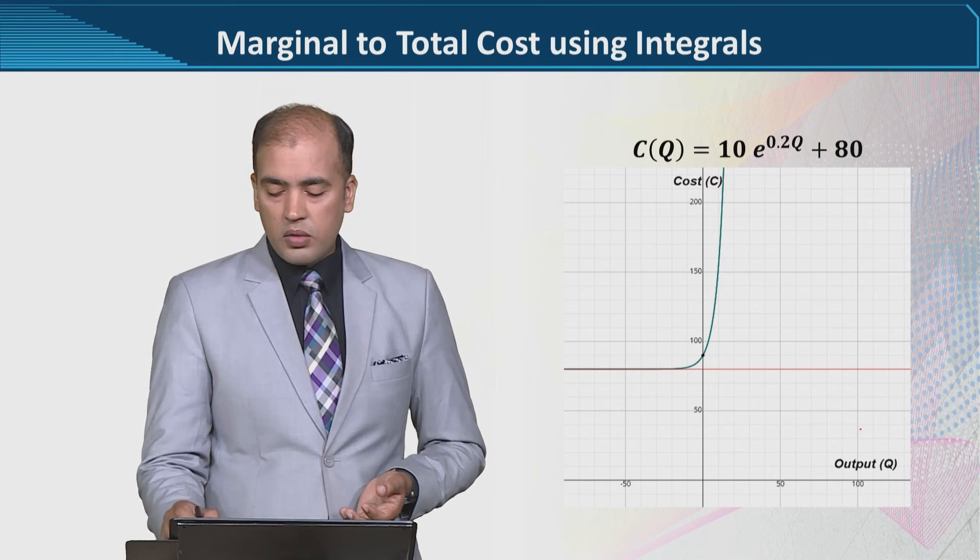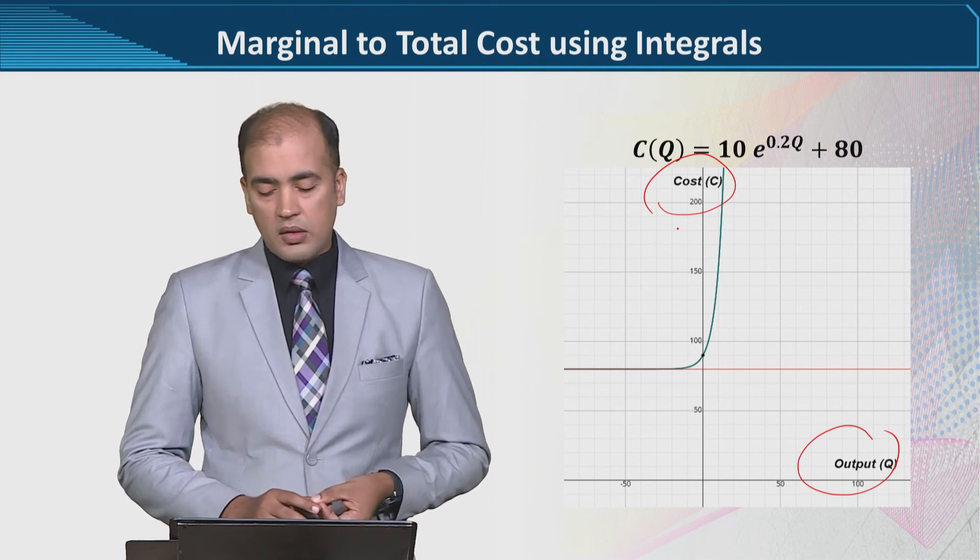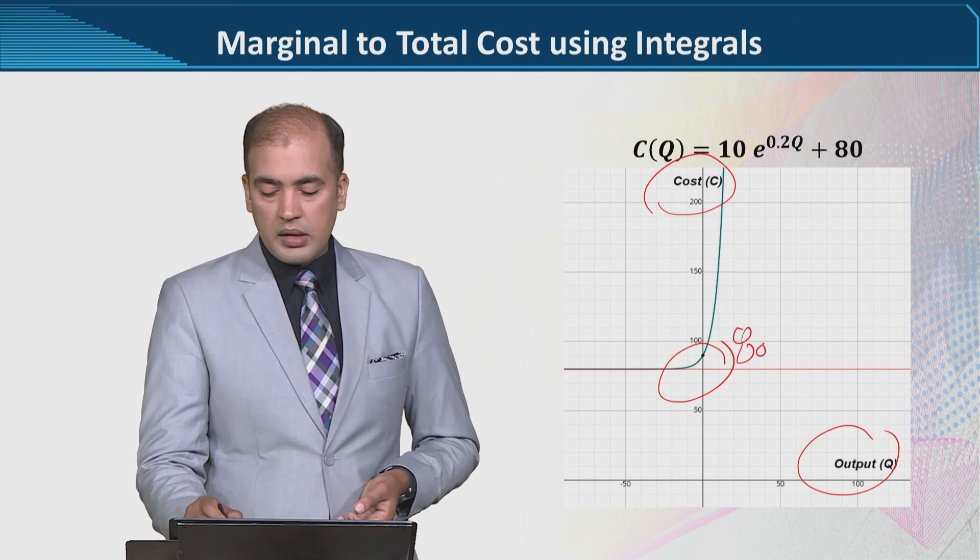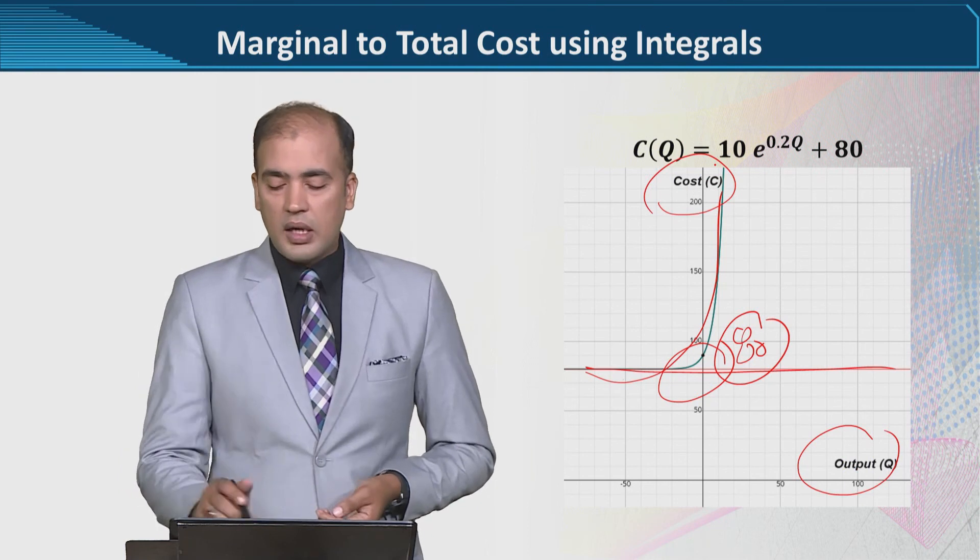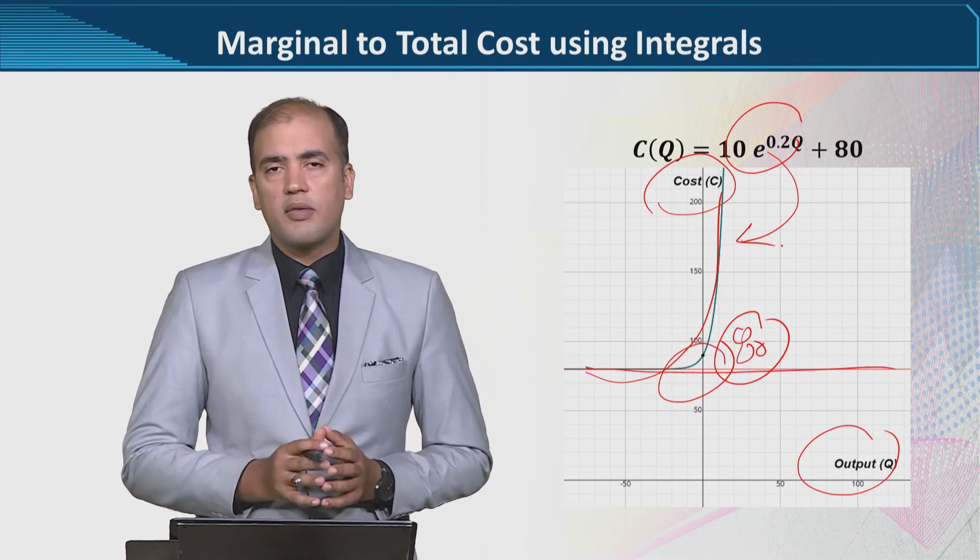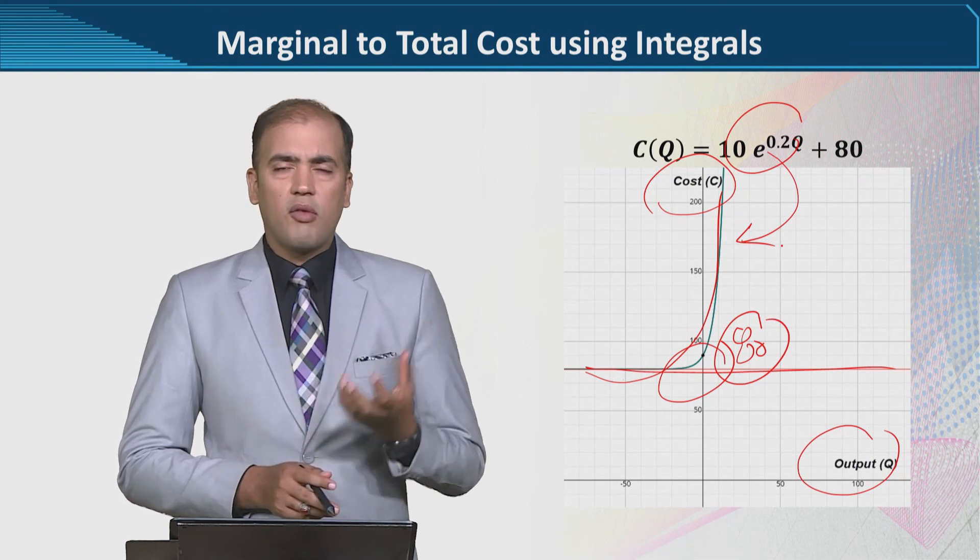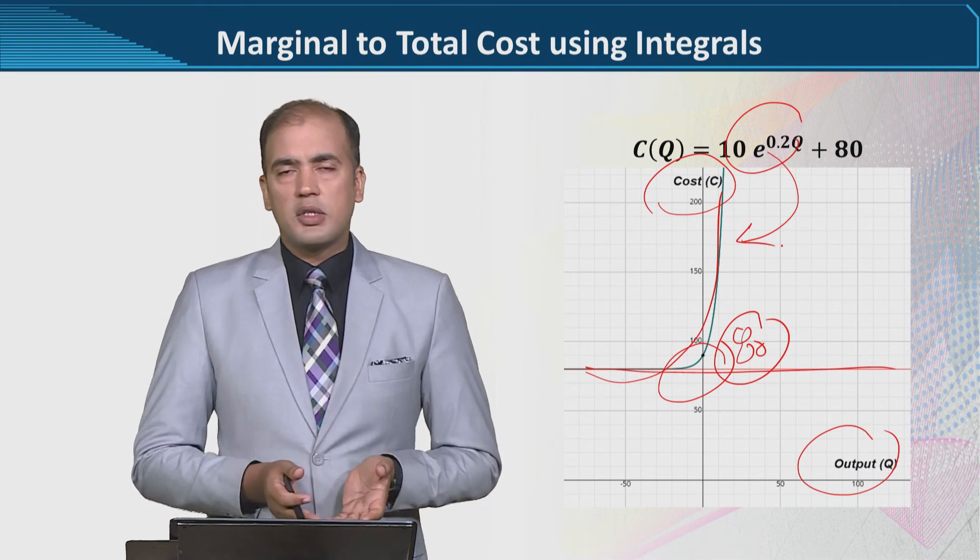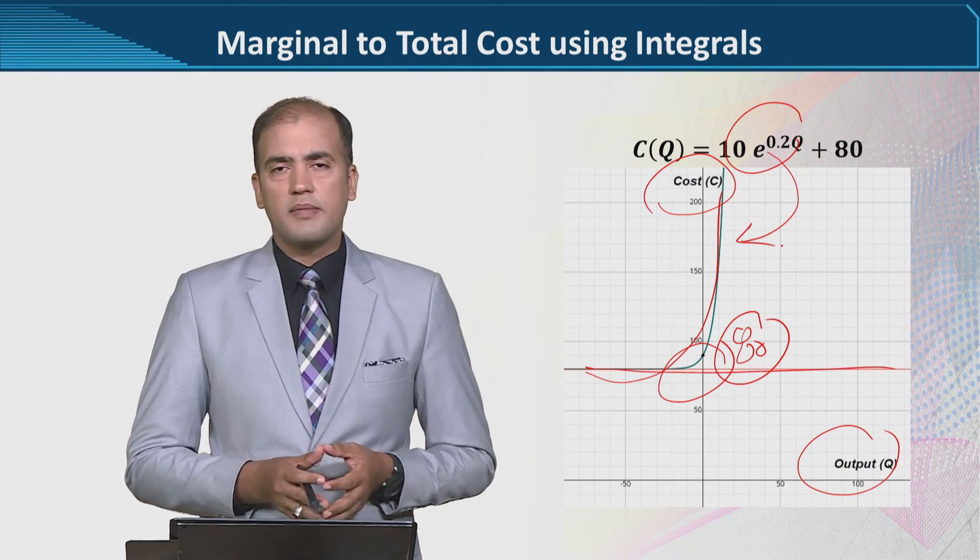Now if we want to plot, that is also possible. Here we can see the output is considered on x-axis and the cost on y-axis. We can plot and we can see that the intercept is at the fixed cost. There is a sharp rise that is exponential in nature. As output increases in an exponential fashion, we will see an increase in the cost. So this is how by using integration we can find the total cost function from the marginal cost function. Thank you.